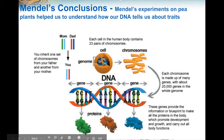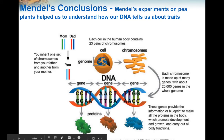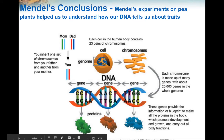Another gene gives information on making a protein that determines our eye color, and another section of DNA gives information about making a protein that tells us our hair color. So different sections of DNA are called genes, and those genes give us information on how to make proteins that will tell us what our traits are going to be.